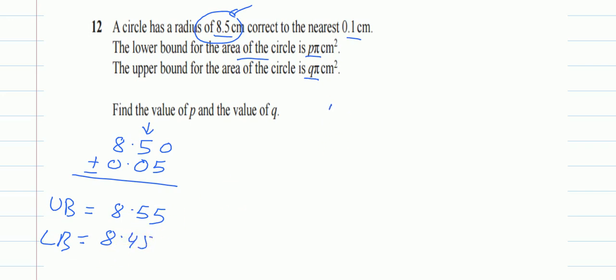So to find the area we know the formula of area is pi r squared but if you carefully look here you will see the pi is still there they have not multiplied, all they have used is r squared. So I will say r squared which is for my upper bound my r squared will be 8.55 squared and for my lower bound it will be 8.45 squared.